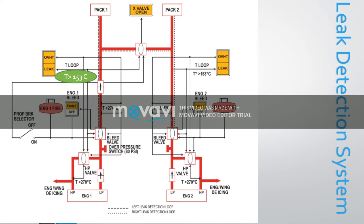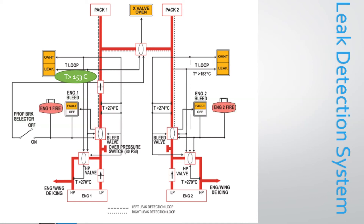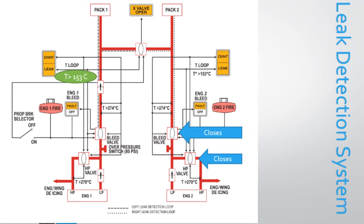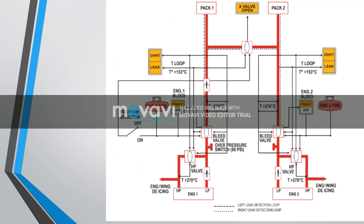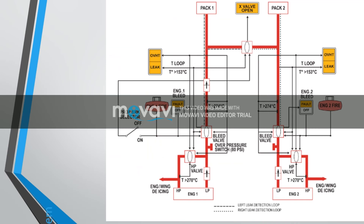After a one-second time delay, the associated pack valve, HP valve and bleed valve — and the ground cross-feed valve if the left loop is affected — are automatically latched closed. Note: in case of a leak, the crew must consider the associated bleed system overheat control system.